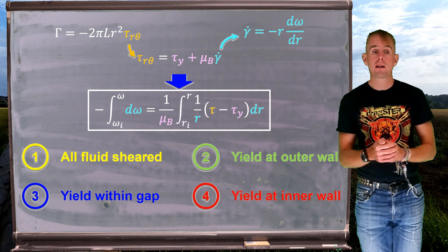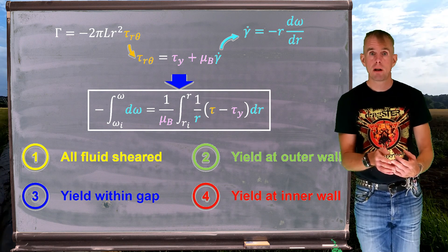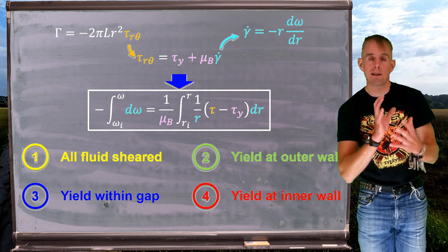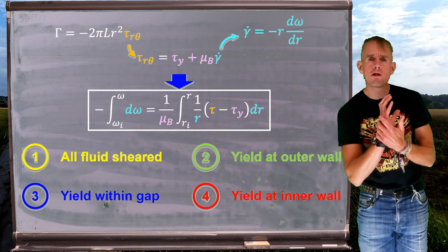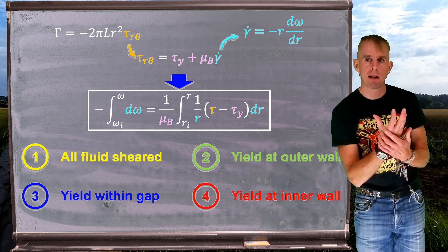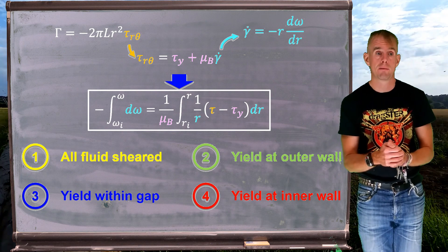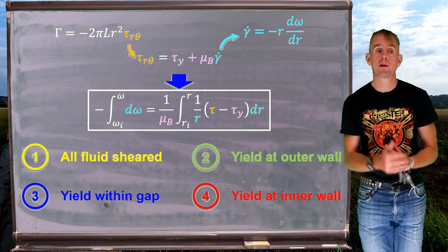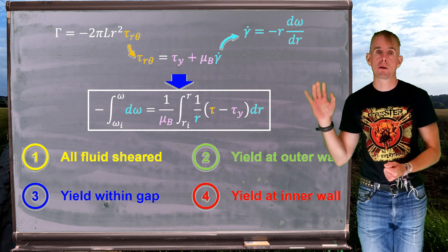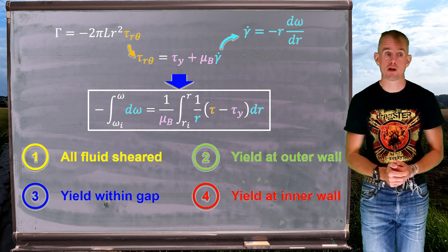Finally, we could have another limiting case, which is just where the material is yielding at the inner wall, where flow is just incipiently starting in the entire Couette system. We're going to focus on case one for now. We'll cover cases two through four next lecture.